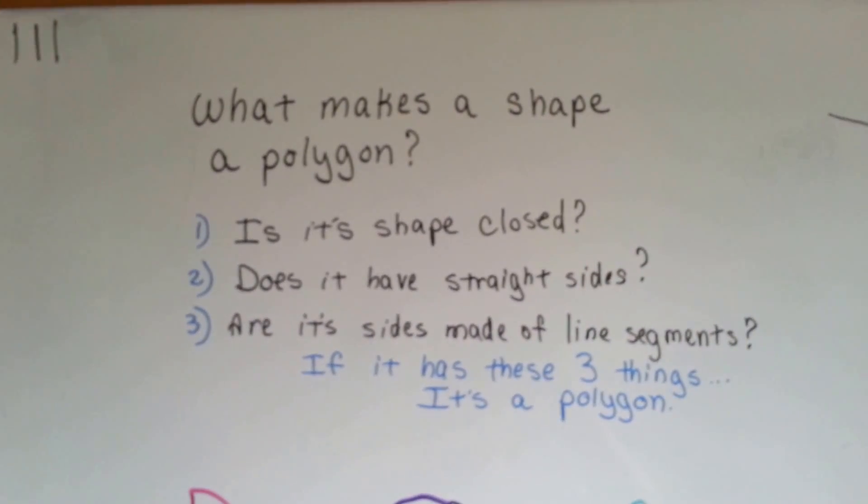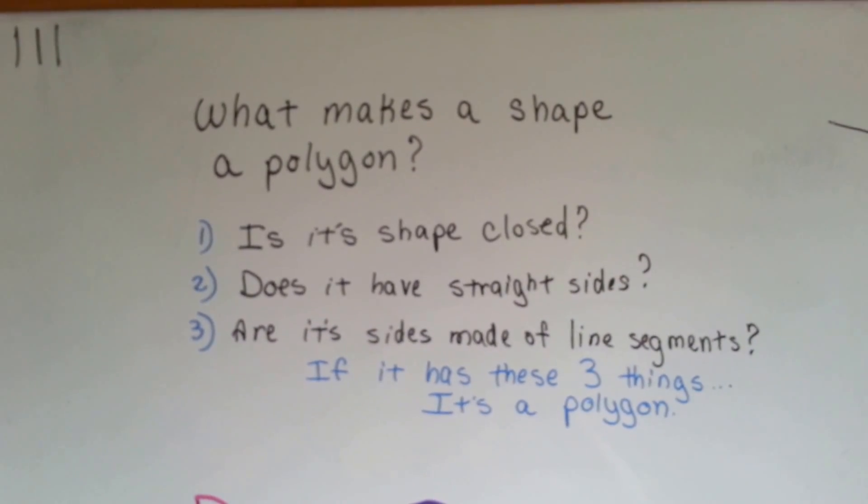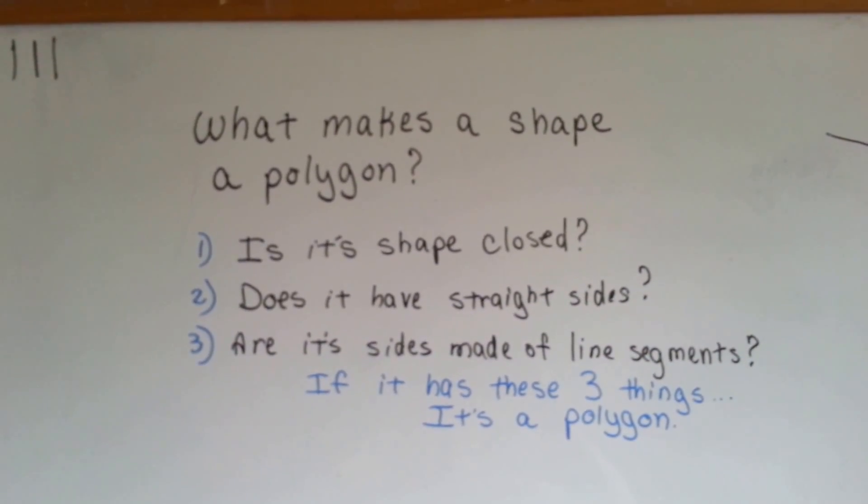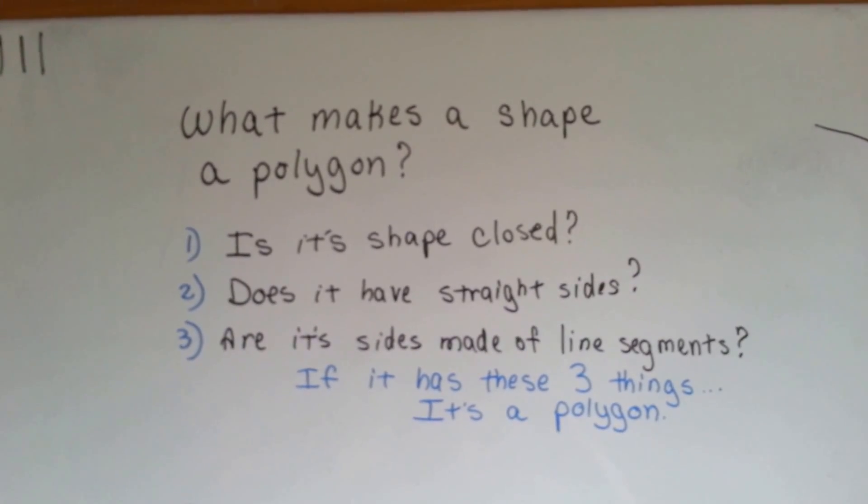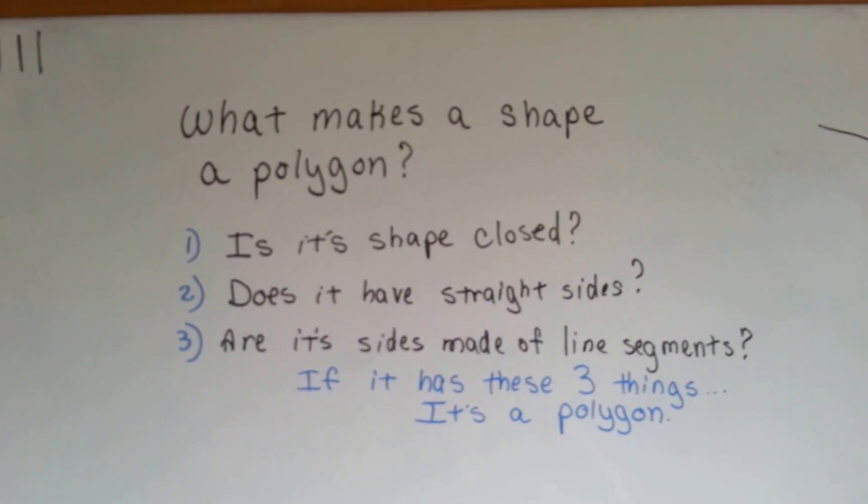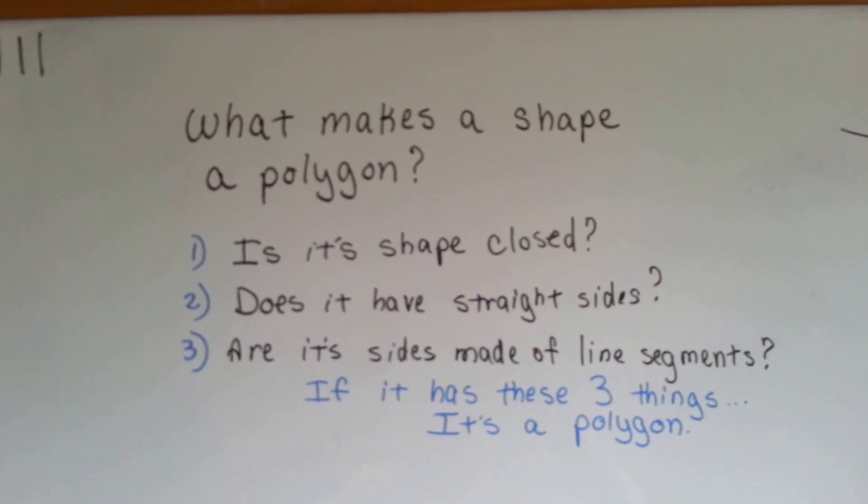Well, you can ask yourself these three questions. Is its shape closed? Does it have straight sides? Are its sides made of line segments? If it has these three things, it's a polygon.